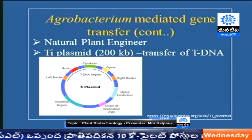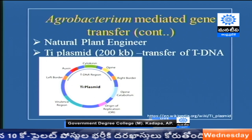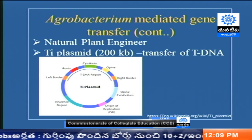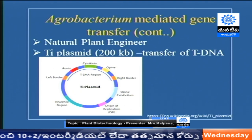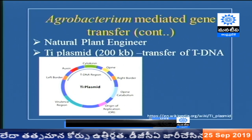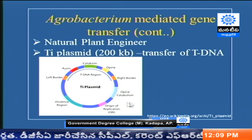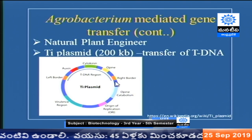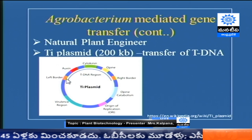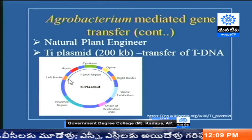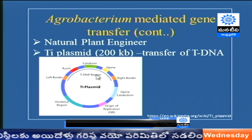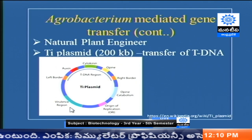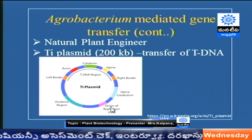In Agrobacterium-mediated gene transfer, only the T-DNA is transferred, not the entire 200 kb plasmid. The Ti plasmid structure includes the virulence region, the origin of replication, the right border of the T-DNA, and the left border of the T-DNA. The DNA between the left border and right border is the T-DNA. The left border, right border, virulence genes, and origin of replication are the most important parts of the Ti plasmid and must not be altered.